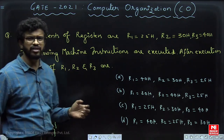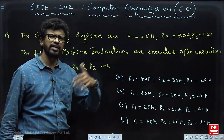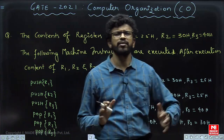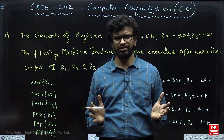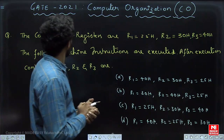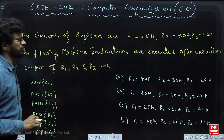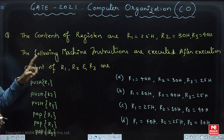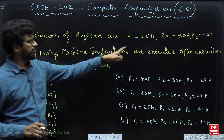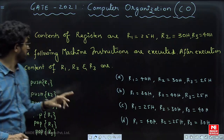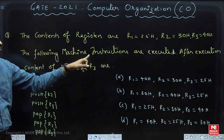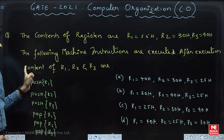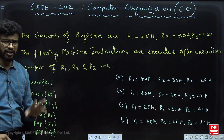Computer Organization is a bit related to microprocessors. It is a generalized subject where we study different types of processor structures or CPU structures. The question given: the contents of registers are R1 = 25, R2 = 30, R3 = 40, and the following machine instructions are executed. After execution, what are the contents of R1, R2, and R3?